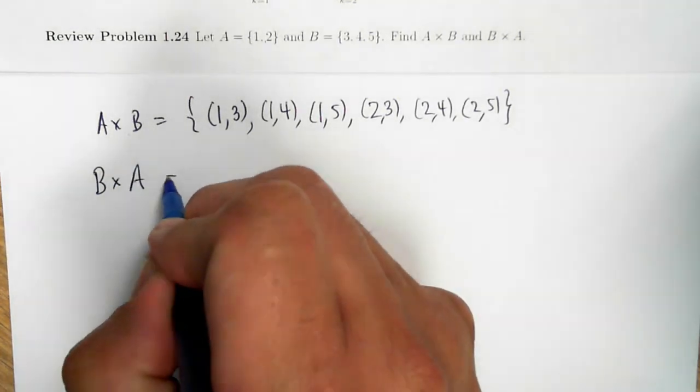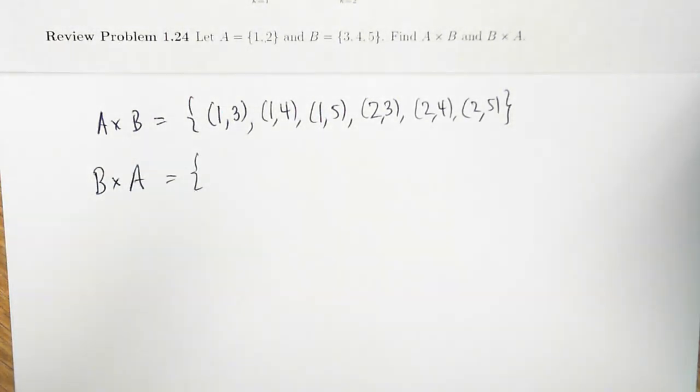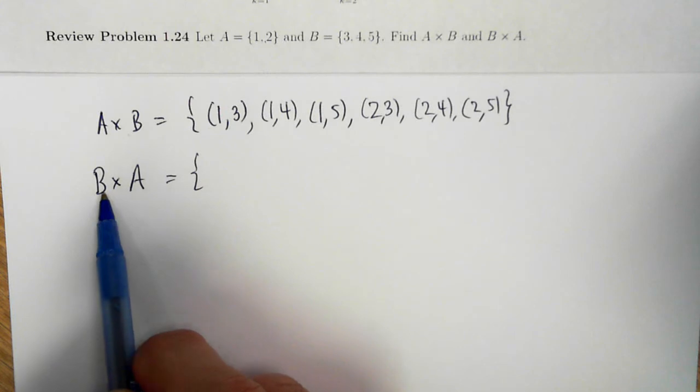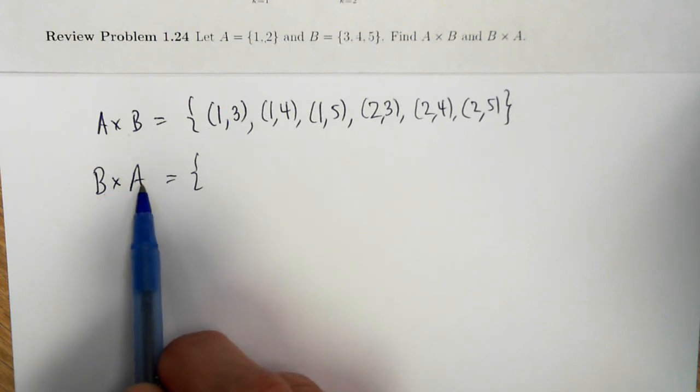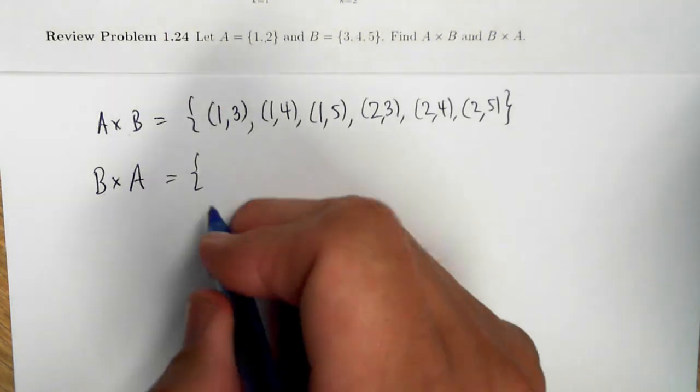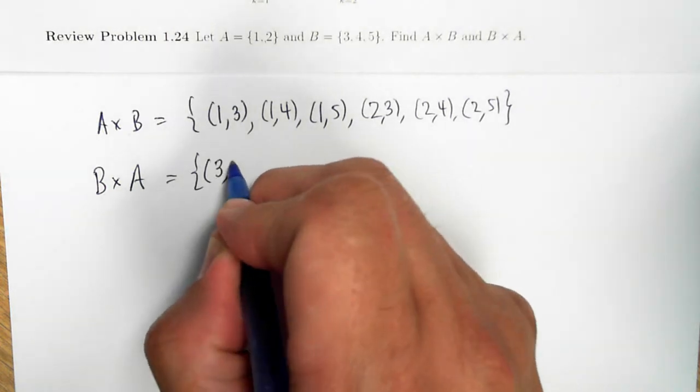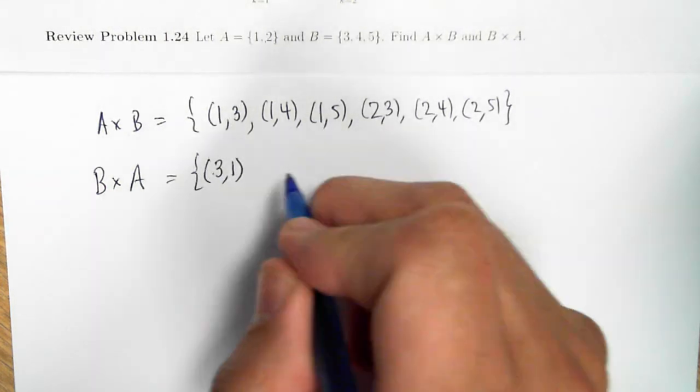The other Cartesian product that could be taken of these two sets would have the first coordinate lie in B and the second coordinate lie in A. So I still have ordered pairs, but the first coordinate lies in B and the second coordinate lies in A.